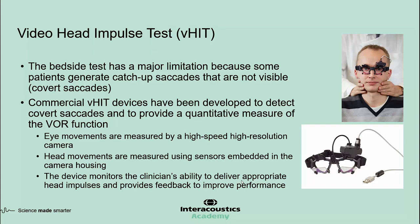In the 1990s, scleral search coils were used for identifying covert saccades and quantifying the head impulse test, but that method is not practical for routine clinical testing. Around the year 2010, the video version of the head impulse test became available commercially. In VHIT, eye movements are recorded and analyzed by high-speed cameras, and head movements are measured by motion sensors embedded in the goggles. The device can monitor the clinician's ability to deliver appropriate head impulses and provide feedback to improve performance.